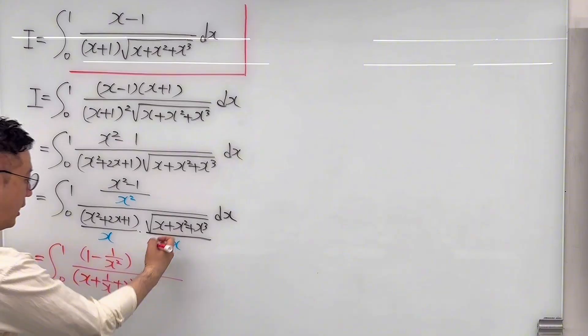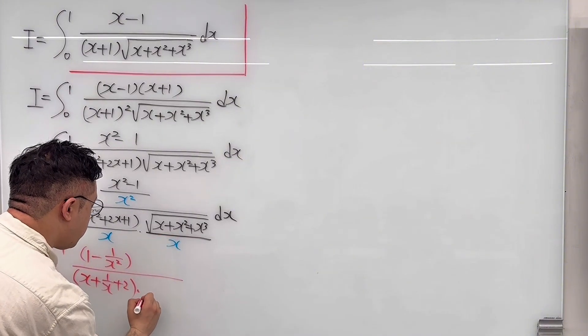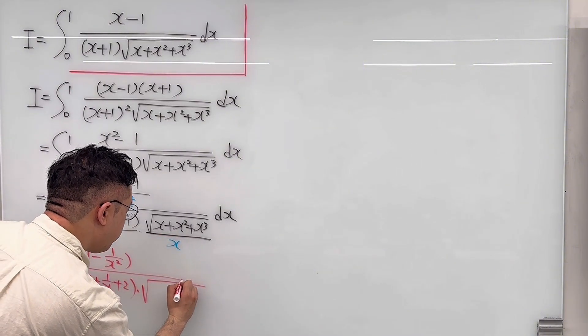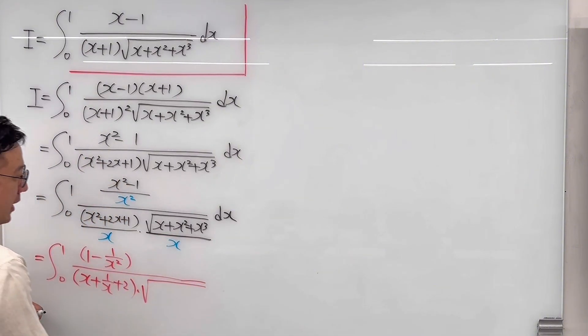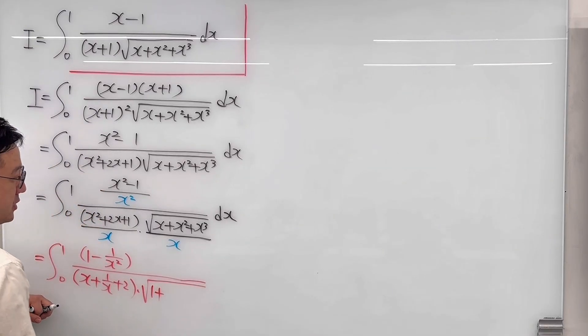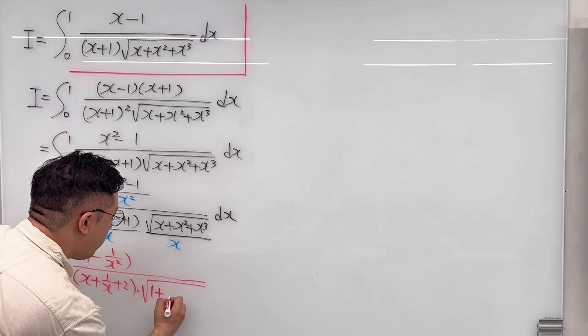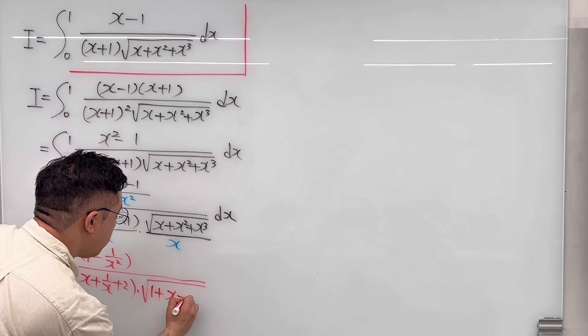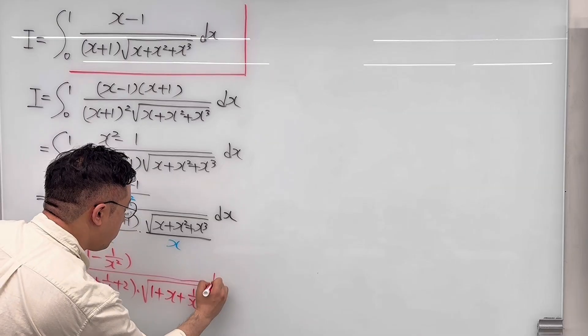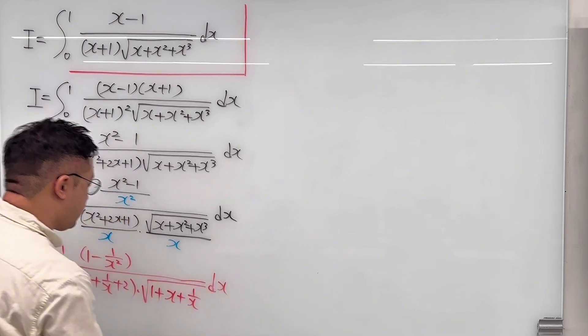That times the square root part, which becomes the square root of 1 plus x plus 1 over x, and then we have dx. So that we can use u-substitution.